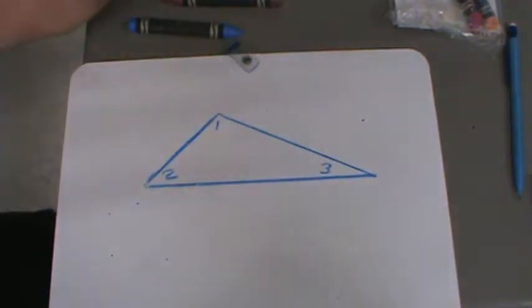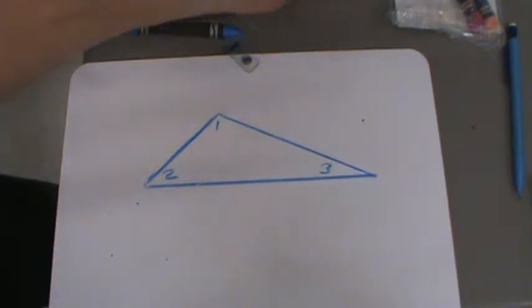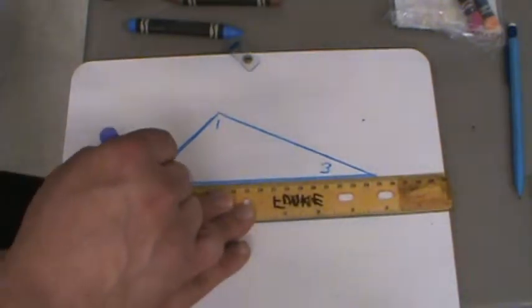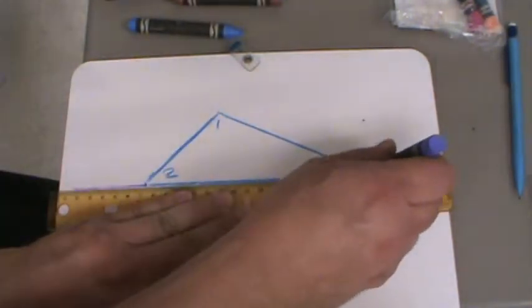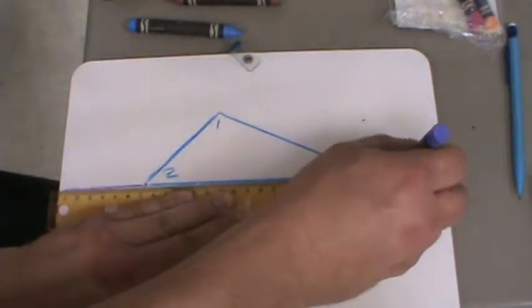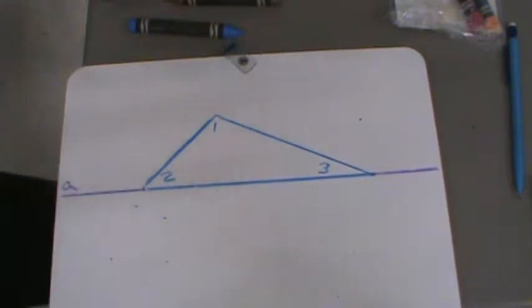To start, we have a triangle. I've drawn a triangle, any old triangle, doesn't have to be a right triangle, and I've labeled the three interior angles 1, 2, and 3. Now, if I take a ruler and I extend the base out in both directions to create a new line, I'm going to take that and I'm going to label this line A.